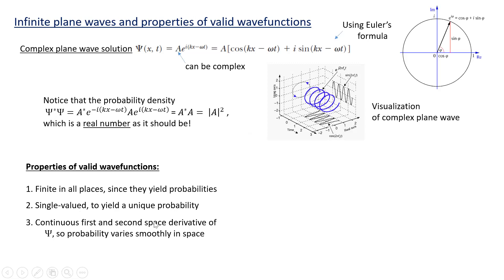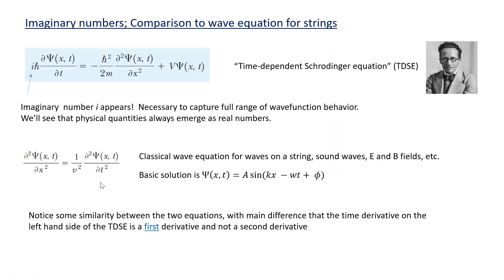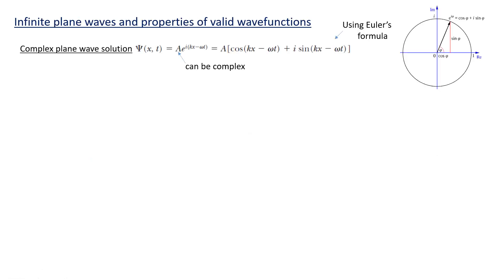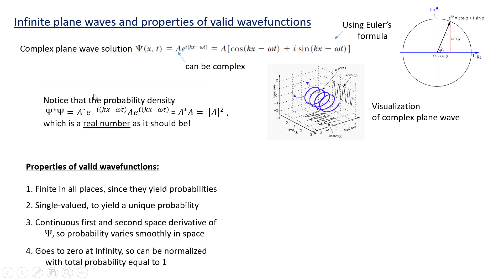Third, there should be a continuous first and second space derivative of the wave function ψ, so the probability varies smoothly in space. This is because the equation here has a second derivative in it, and if the second derivative has a discontinuity, that throws off, that gives a discontinuity in ψ, and that means the probability has a kink in it, and that doesn't physically make sense. Probabilities should vary smoothly. Finally, the wave function should go to zero at infinity, so it can be normalized. Remember that the total probability of observing a particle is equal to one, and so if the wave function doesn't go to zero at infinity, then there's no way that the integral of its square can be one. So it has to go to zero at infinity.